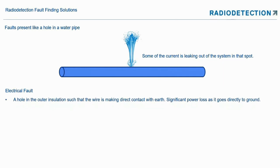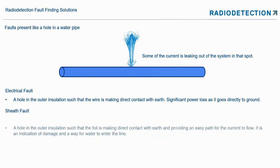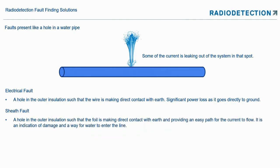With electric faults, this could be a hole in the outer insulation making direct contact with earth, which causes significant power loss as current goes directly to ground. A sheath fault is a hole in the outer insulation so that the sheath or foil is making direct contact with earth — that's an easy path for current to flow to earth.